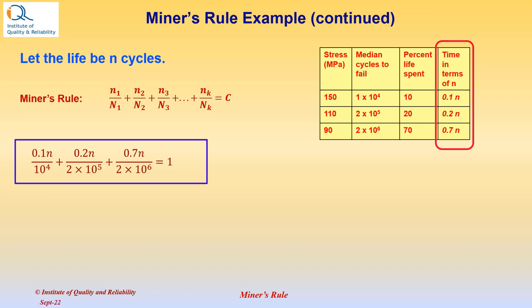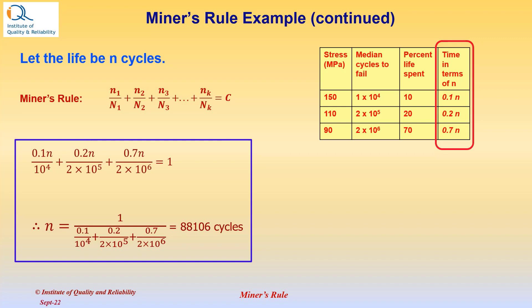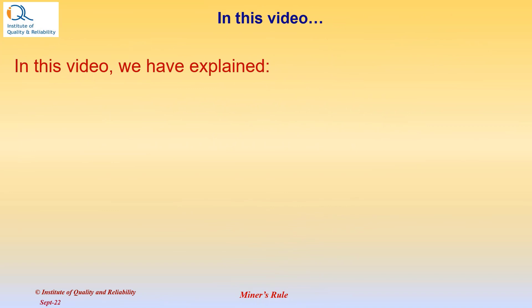Now we can write the equation 0.1n/10^4 + 0.2n/(2×10^5) + 0.7n/(2×10^6) = 1. This is only substituting the numbers in Miner's rule. Now if we solve this for n, we can easily see that the life n equals approximately 88,106 cycles.